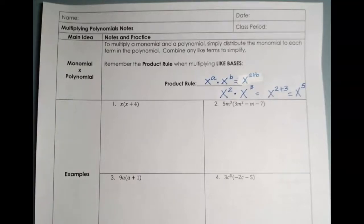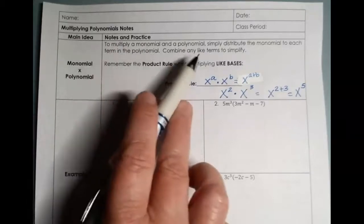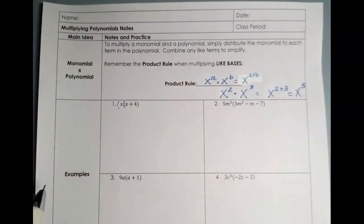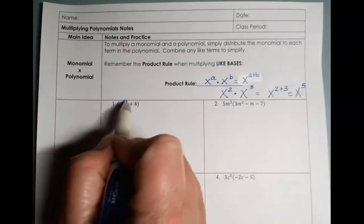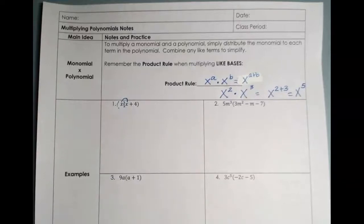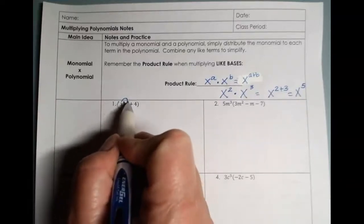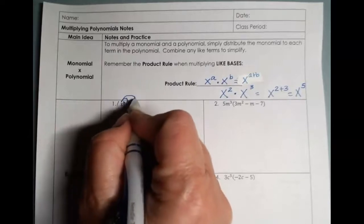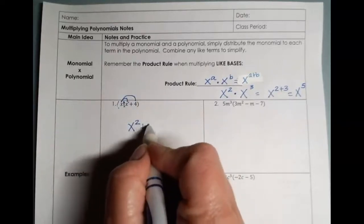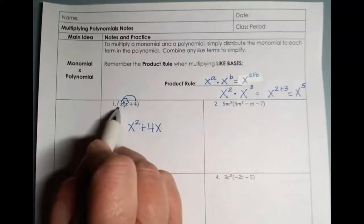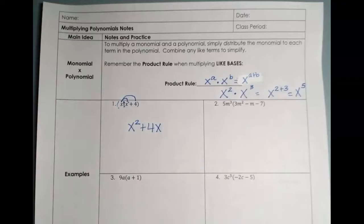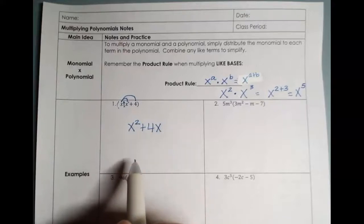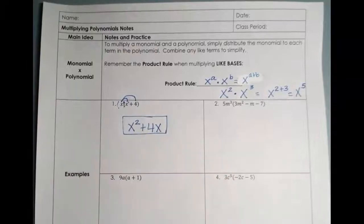Let's try a couple of these. We're going to take the monomial and distribute it to the polynomial — sometimes you'll see the first term in a parenthesis also, but usually not. So x next to a parenthesis means multiply it to everything inside. x times x — they're both x to the first — gives x squared, because 1 plus 1 is 2. Then x times positive 4 gives positive 4x. We want to make sure there are no like terms to combine. We have x squared and x to the first, so they're not like, and it's in standard form.